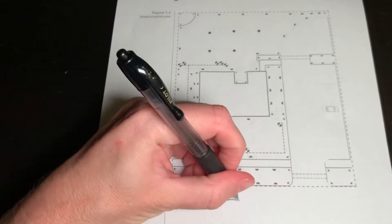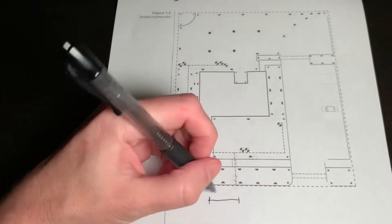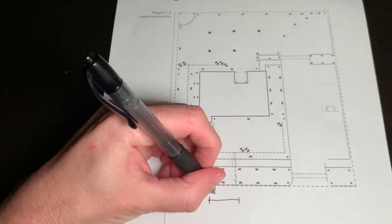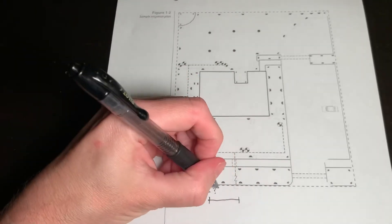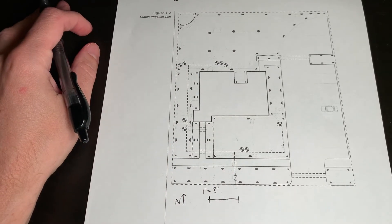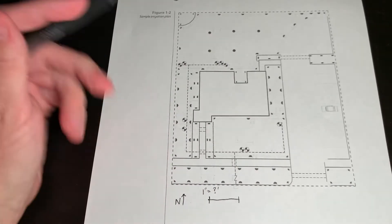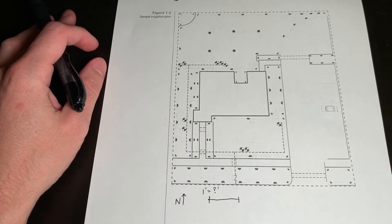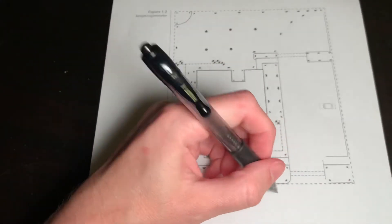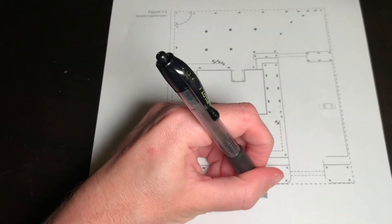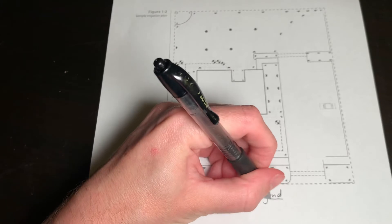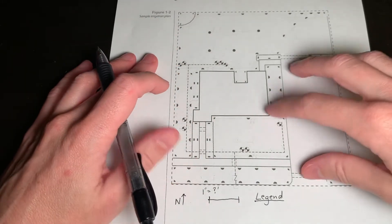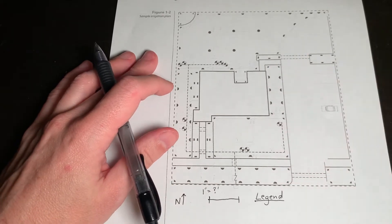The other thing it's missing is a scale. So like one inch equals how many feet. We need the scale in order to collect all of the data that we need. And then the final piece that it's missing is a legend. The legend is the guide that tells you each of these symbols and what they mean.